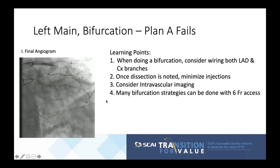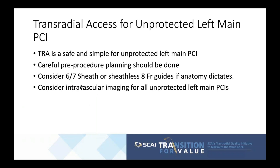The learning points from case three: for any bifurcation lesion — even a 0-0-1 — consider wiring both LAD and circumflex branches. Once dissection is noted, minimize contrast injection to prevent propagation. Always consider intravascular imaging. Many bifurcation strategies can be done with 6 French access, and familiarity with each is essential. In summary: transradial access is safe for unprotected left main PCI; careful pre-procedure planning is essential; consider 6-7 French sheaths or a sheath-less 8 French guide as anatomy dictates; and intravascular imaging should be considered for all unprotected left main PCI.